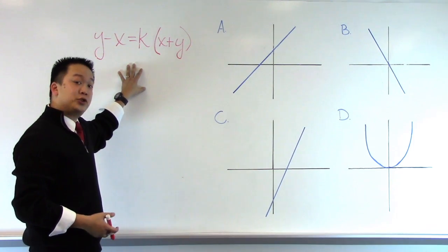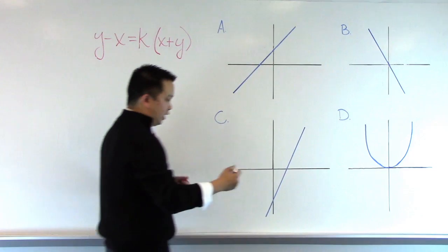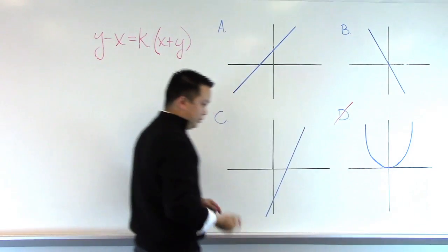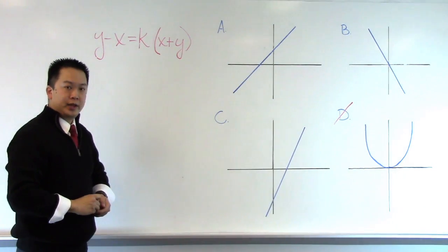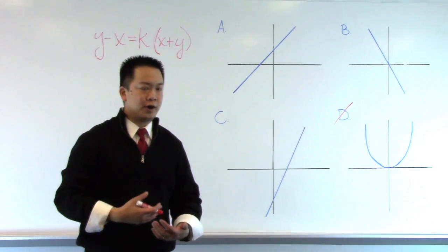Therefore, any answer choice that does not contain a line, we can cross off. Sure enough, answer choice D, we can eliminate because it is a parabola. At this point, we might be thinking, how will I start? Where am I going to start to solve this problem?